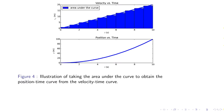Figure 4, this illustrates the taking of the area under the curve to obtain the position time curve and the velocity time curve. For example, vx is a straight line, which is generally the function of t, and x is increasing like t squared because we're taking the area under the curve.